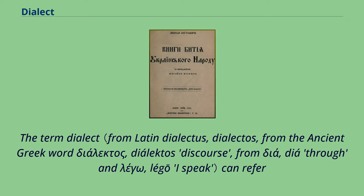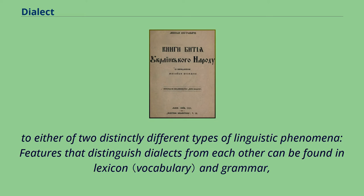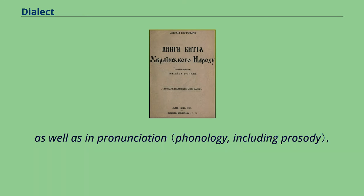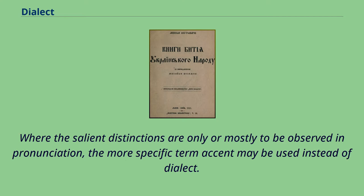The term dialect can refer to either of two distinctly different types of linguistic phenomena. Features that distinguish dialects from each other can be found in lexicon and grammar as well as in pronunciation. Where the salient distinctions are only or mostly to be observed in pronunciation, the more specific term accent may be used instead of dialect.